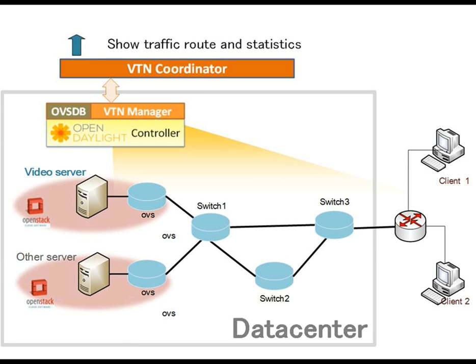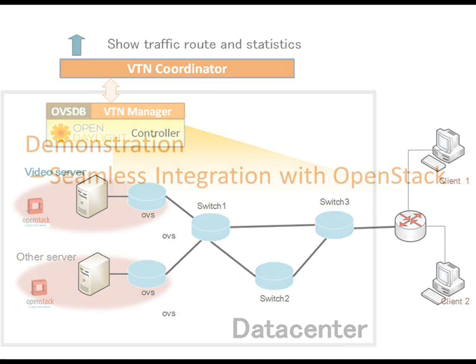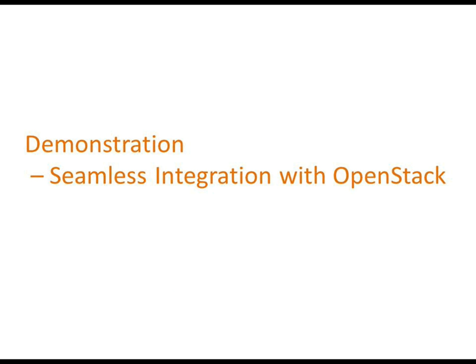The network topology used in this demo consists of two VMs hosted using OpenStack — the first one is the video server and the second is the other server — and three OpenFlow switches simulated using Mininet. Two client machines are connected to the servers via the OpenFlow network: client one streaming video from the video server, and client two connected to the other server.